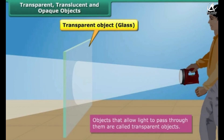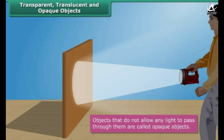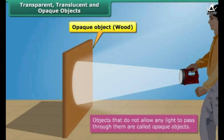Glass, clean air, and pure water are examples of transparent objects. Objects that do not allow any light to pass through them are called opaque objects; as a result, we cannot see through them. When light falls on an opaque object, its shadow is formed on the other side of it. Wood, sheets of metal, dark colored plastics, and rocks are examples of opaque objects.